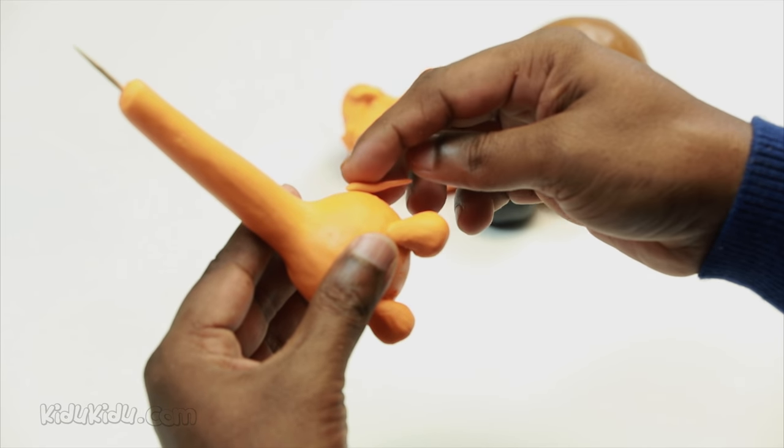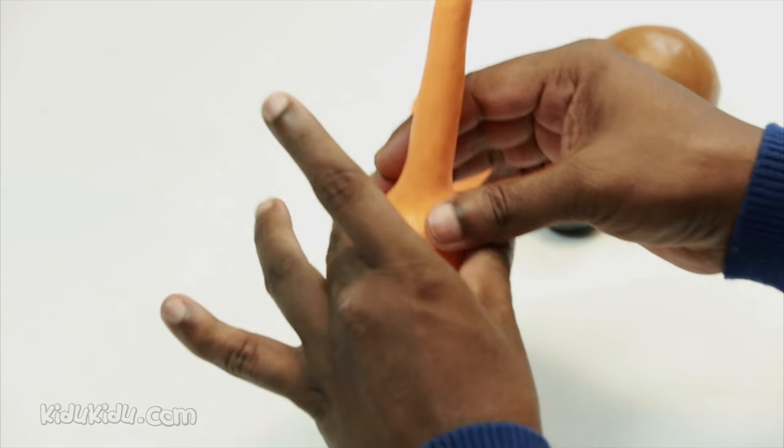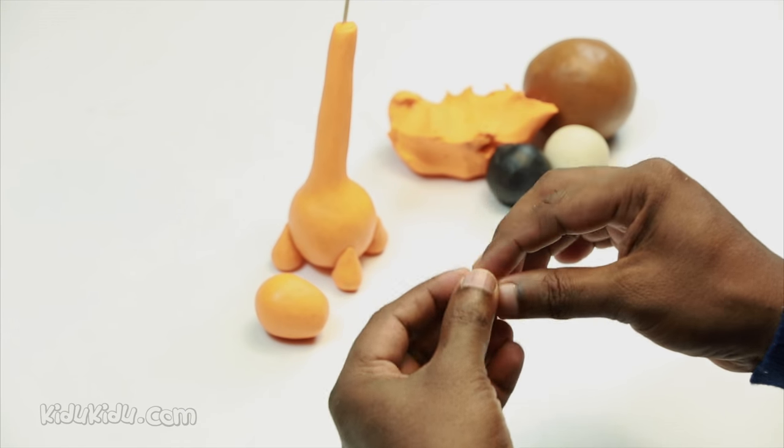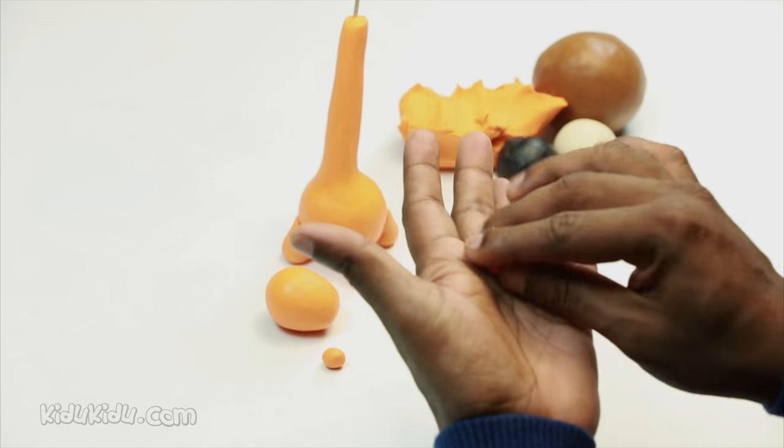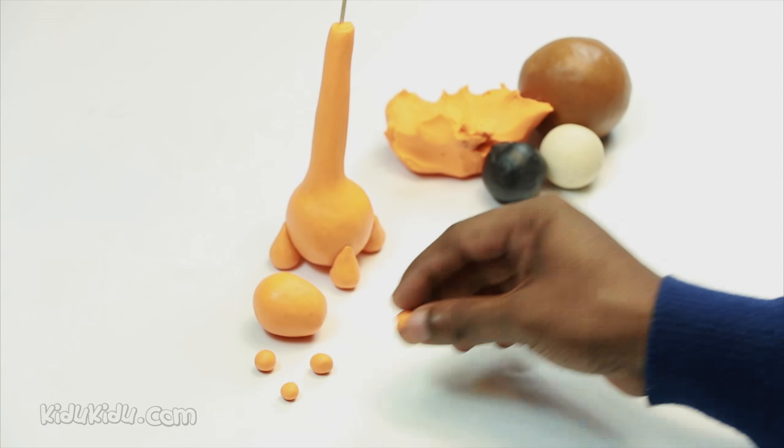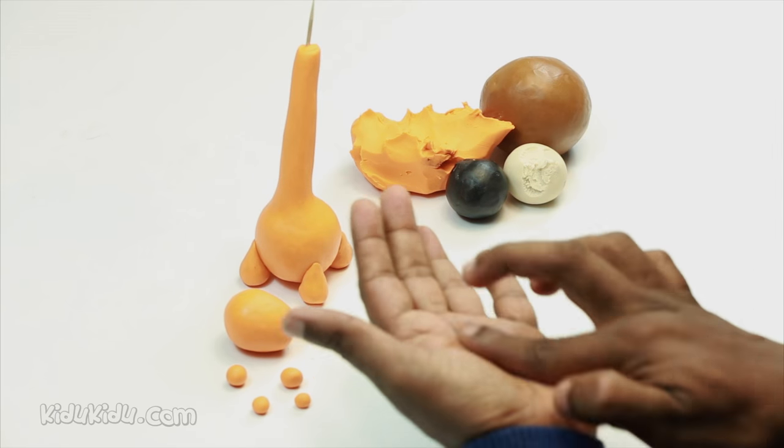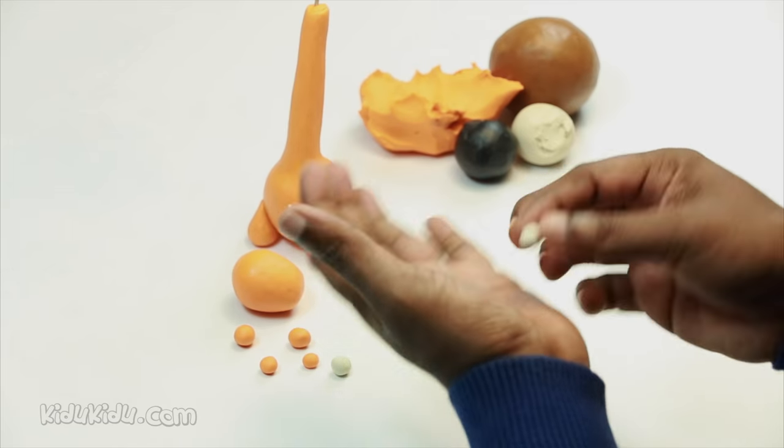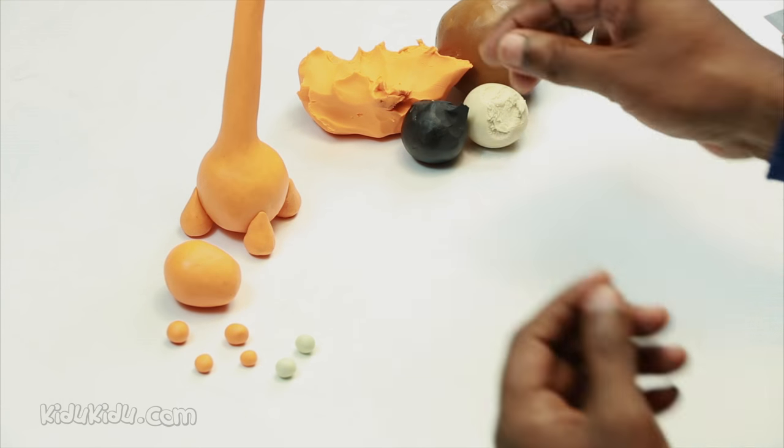Now we attach the tail to the giraffe. Also set aside some play-doh, small amounts, to make the ears later. But we still need the eyes, and this is where the white play-doh and the black play-doh come in.